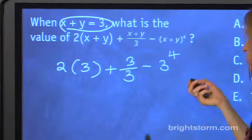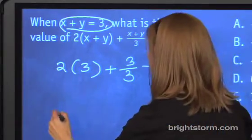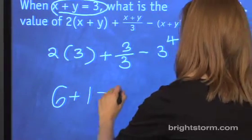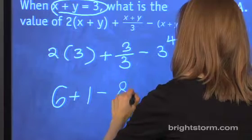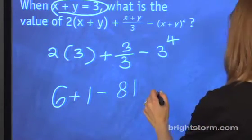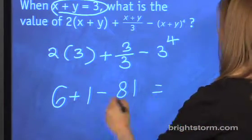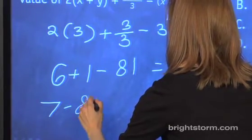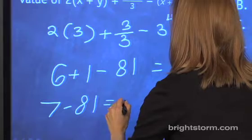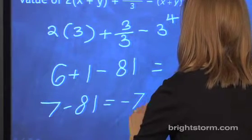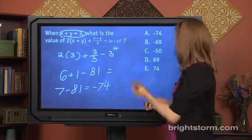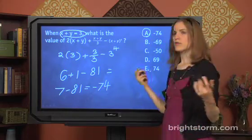Great. So just to simplify, this is 6 plus 1, minus 81. And that is equal to 7 minus 81, or negative 74. And we've got it. So it wasn't that bad after all. And answer choice A would be correct.